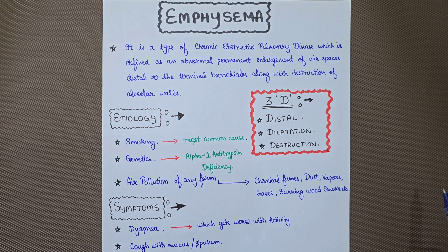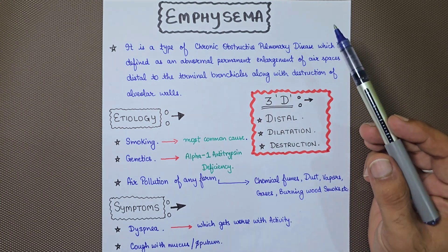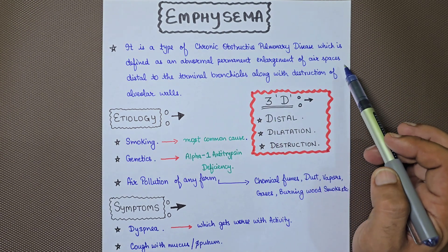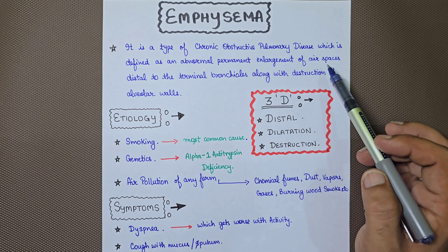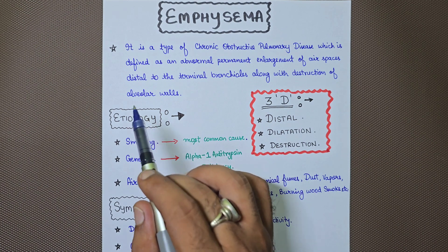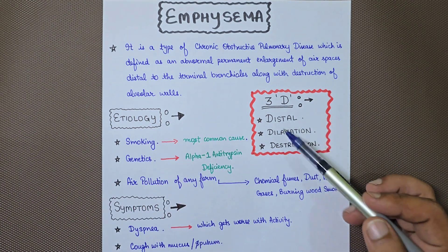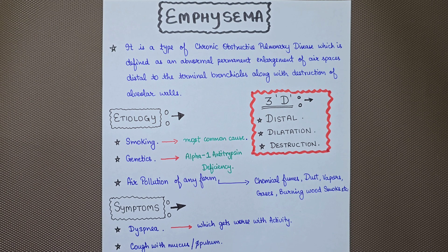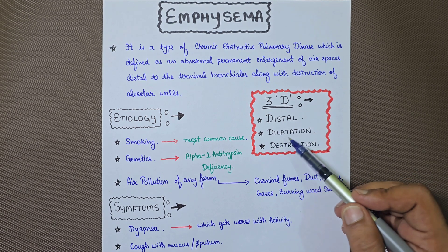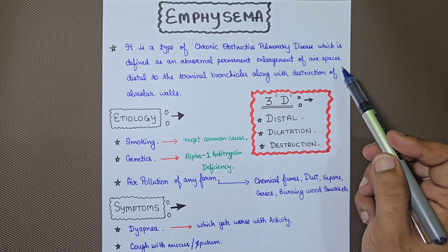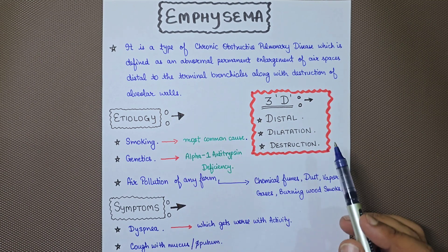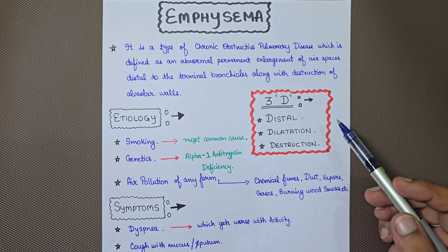Hello everyone. In this video we are going to talk about emphysema. Emphysema is a type of chronic obstructive pulmonary disease, defined as an abnormal permanent enlargement of air spaces. There is permanent enlargement of the air spaces distal to the terminal bronchioles along with the destruction of the alveolar walls. To remember it easily, think of the 3Ds: distal, dilatation, and destruction. This is the basic definition of emphysema.